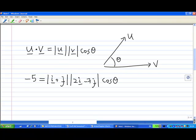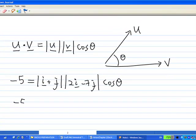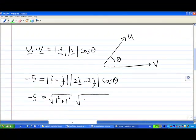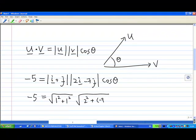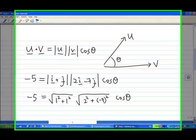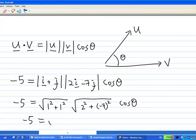Now, in this case, minus 5, the modulus of i plus j is square root of 1 squared plus 1 squared, alright? And the modulus of 2i minus 7j is 2 squared plus minus 7 squared. And so, you get minus 5 equal to square root of 2 times square root of 53 cos theta.